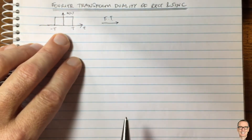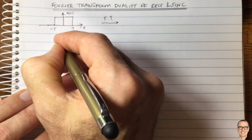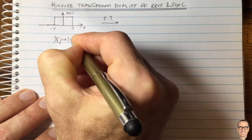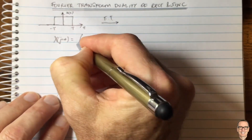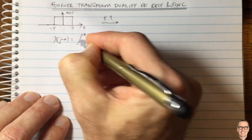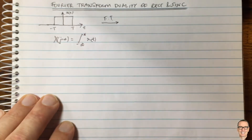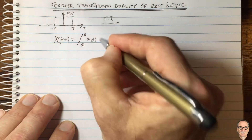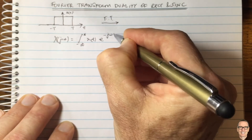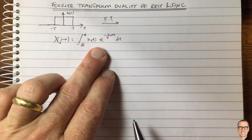Let's look at the Fourier transform. The equation tells us we need to compute the integral from minus infinity to infinity of x(t) times e to the minus j omega t, integrated over dt.